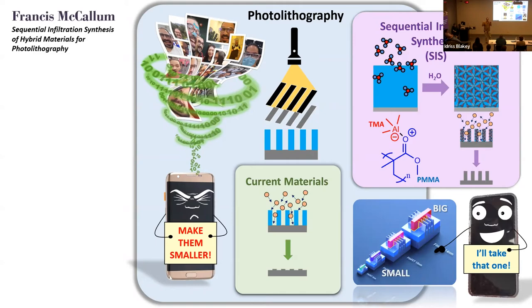Well, there's a process called photolithography, and the origin of this word essentially means we use light to write onto a stone. The way this process works is we shine light through a mask which has our features on it, and then the light touches a thin film which is on top of a silicon wafer. We then wash away the areas where the light doesn't touch, and it makes these gaps.